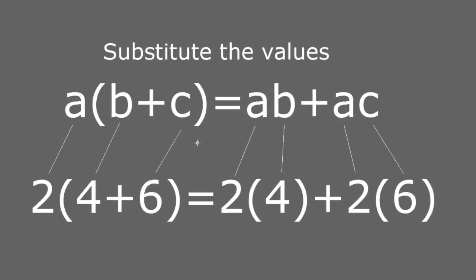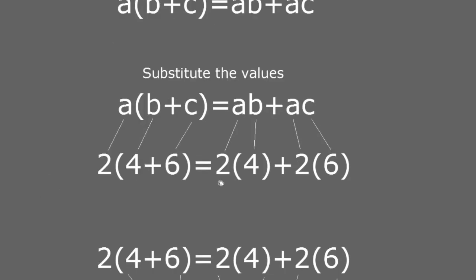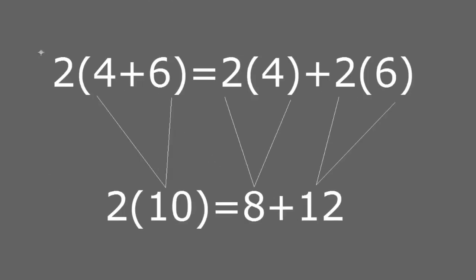Here we have substituted the values. A multiplied by b plus c becomes 2 multiplied by 4 plus 6. That equals ab, which is now 2 times 4, and ac, which is now 2 times 6. Now 2 multiplied by 4 plus 6 becomes 2 times 10. 2 times 4 is 8 and 2 times 6 is 12, giving us 2 multiplied by 10 equals 8 plus 12.